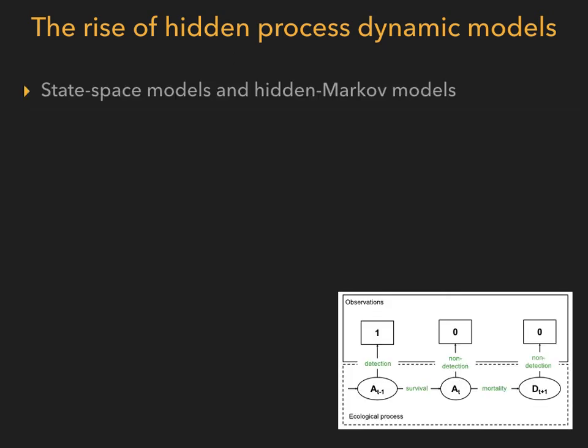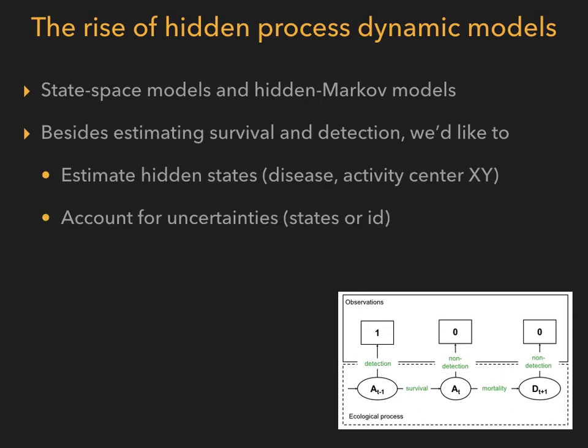These models are called state-space models, and also hidden Markov models — which are particular cases of state-space models in which the sequence of states (alive or dead) is Markovian. In addition to estimating survival and detection probabilities, the objective is to estimate the hidden variables or states like any other parameters — for example, disease states to get prevalence, or the coordinates of activity centers to say something about home ranges — while at the same time accounting for uncertainties in the assignment of states to individuals or in the identification of individuals.